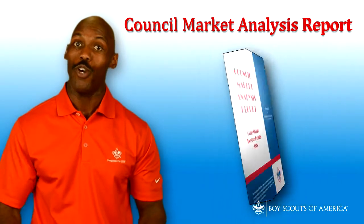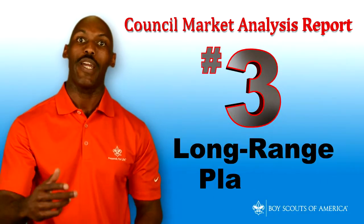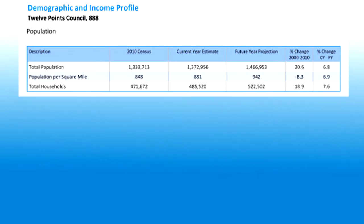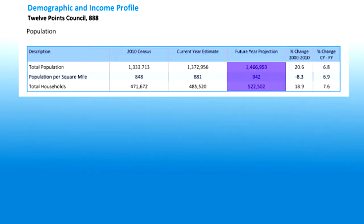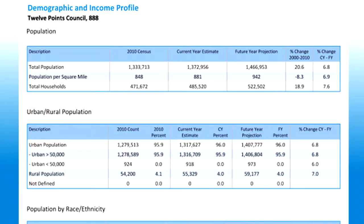So here we go. Reason number three: long-range planning. Use the demographic and income profile in your report. This includes current demographic data about your council area and five-year projections. Keep in mind, this data is not specific to your council's membership.